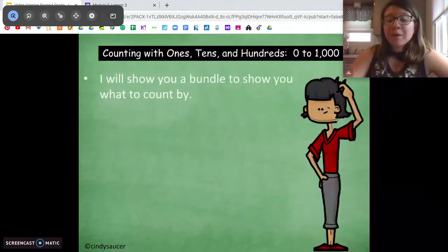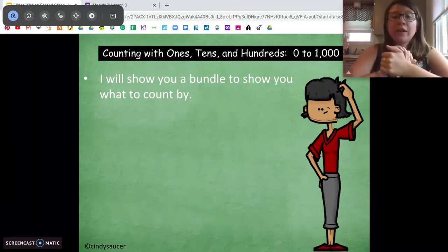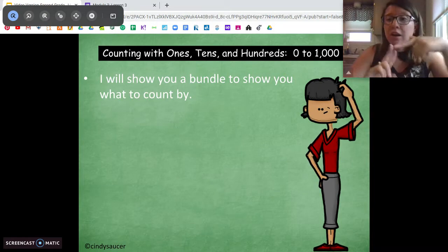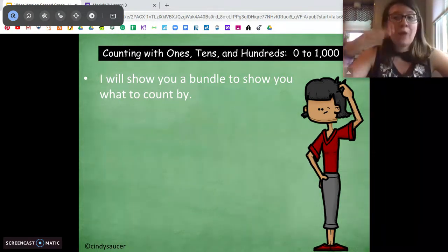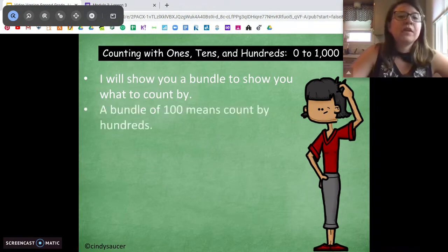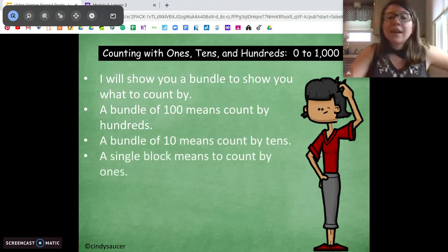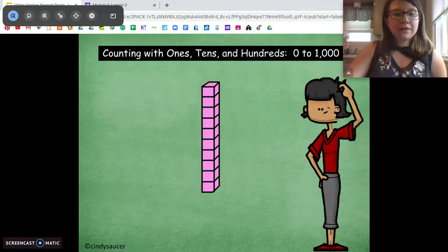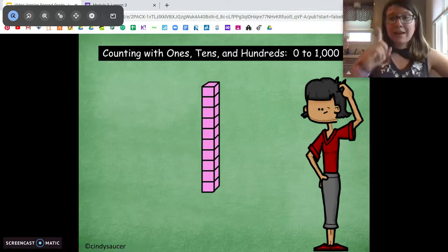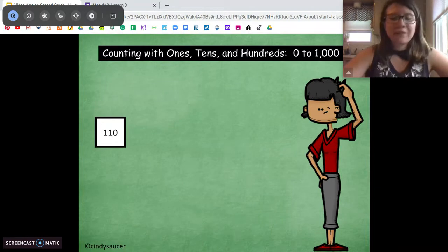Okay, we're going to start up with the same warm-up that we started off yesterday. We're going to start at a number, and I'm going to show you either a 10 stick, a hundreds square, or a ones cube. And we're going to count by either tens, hundreds, or ones, depending on what you see. So a bundle of 100 means count by hundreds. A bundle of 10 means count by tens. And a single block means count by ones. So we're going to start off counting by tens. That's our 10 stick. We're going to start off at 110. Ready?